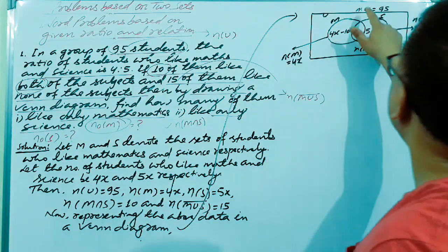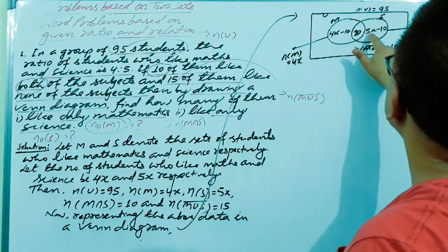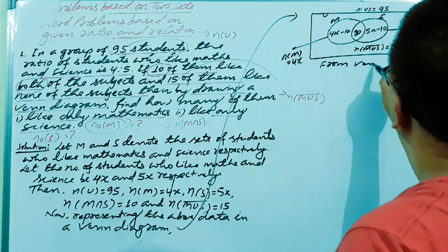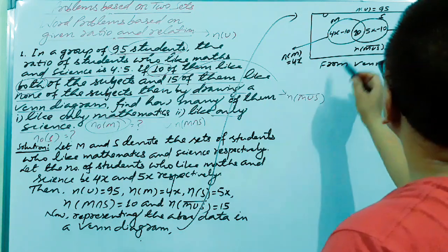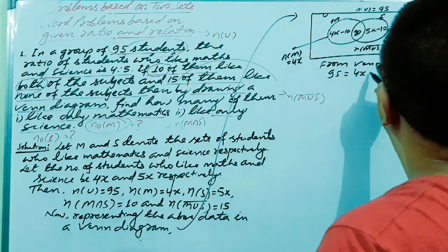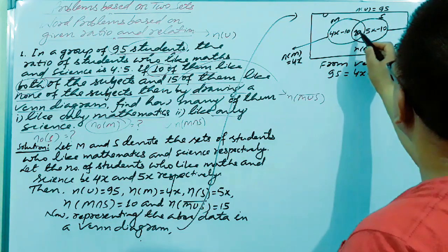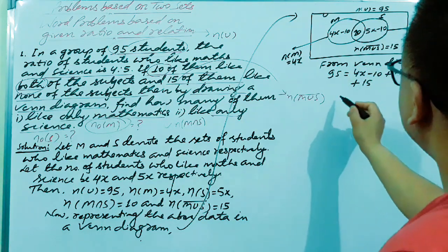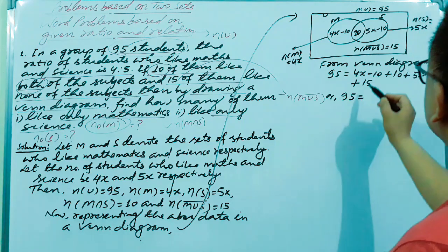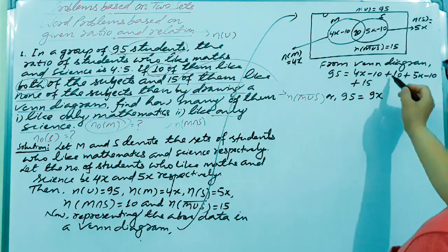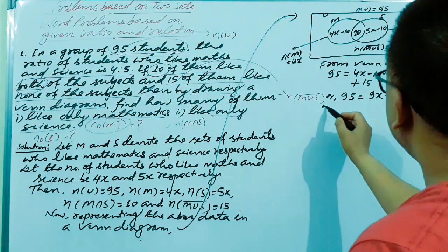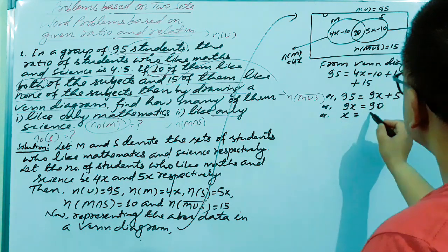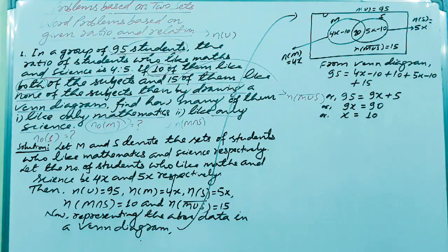To find the value of x, we use the fact that all regions of the Venn diagram must sum to n(U) = 95. From the diagram: (4x − 10) + 10 + (5x − 10) + 15 = 95, which gives 9x + 5 = 95, so 9x = 90, and therefore x = 10.